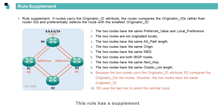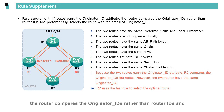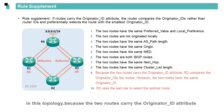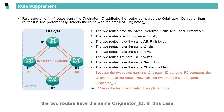This rule has a supplement: if routes carry the originator ID attribute, the router compares the originator IDs rather than router IDs, and preferentially selects the route with the smallest originator ID. In this topology, because the two routes carry the originator ID attribute, R2 compares the originator IDs. However, the two routes have the same originator ID. In this case, R2 uses the last rule to select the optimal route.